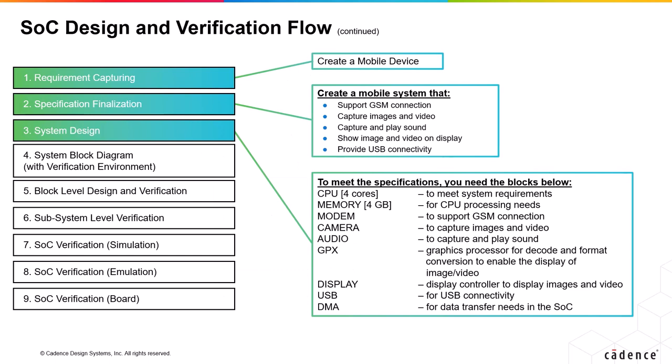This slide explains the starting three steps. The first step for any SOC product cycle is requirement gathering, where the requirement is gathered from customers at a very high level. For example, it can be as simple as creating a mobile device.